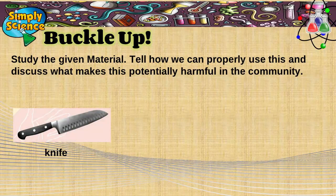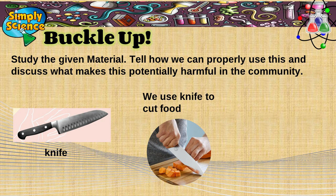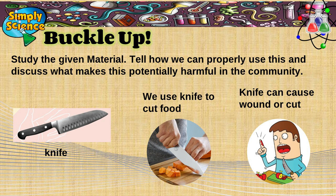Let's do this now. Study the given material, tell how we can properly use it, and discuss what makes it potentially harmful in the community. Number one: knife. We use a knife in cutting foods; however, a knife can also cause wounds and cuts to us. So remember, always be careful in using a knife.